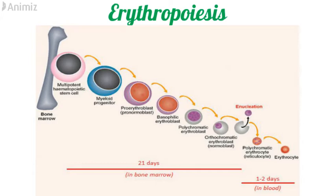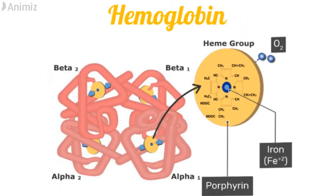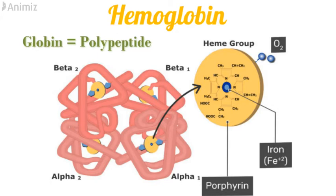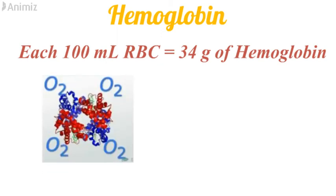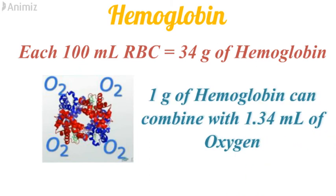The development and maturation of a red blood cell takes place over 21 days inside the bone marrow. After 21 days, the nucleus is removed from the cell and it is released into the bloodstream, where it matures to an erythrocyte in 1 to 2 days. The red color of RBC is due to the presence of hemoglobin. Hemoglobin is composed of a polypeptide called globin and the pigment heme. Each hemoglobin molecule has 4 polypeptide chains — 2 alpha and 2 beta — and each chain has 1 heme group. A heme group consists of an iron molecule held in a heterocyclic ring called the porphyrin ring, and each iron molecule has the ability to combine with 1 oxygen molecule. Each 100 ml of red blood cells contains 34 grams of hemoglobin, and 1 gram of hemoglobin can combine with 1.34 ml of oxygen.